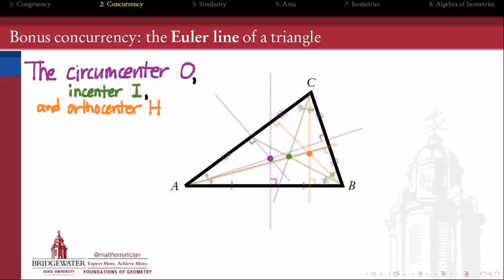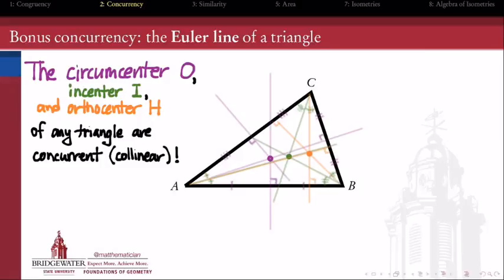So here I have three points: the circumcenter, the incenter, and the orthocenter. In general position we cannot expect three points in the plane to be collinear, but what's remarkable is that these three points are guaranteed to be collinear for any given triangle ABC. They will lie on a common line.